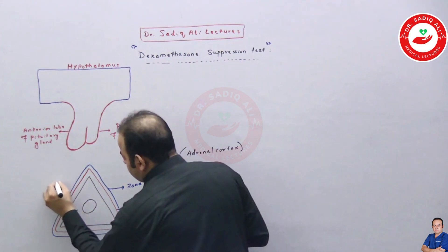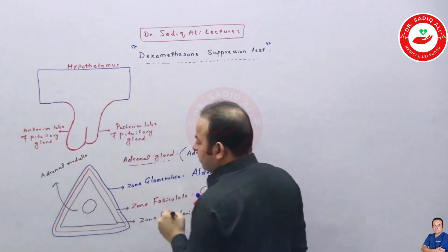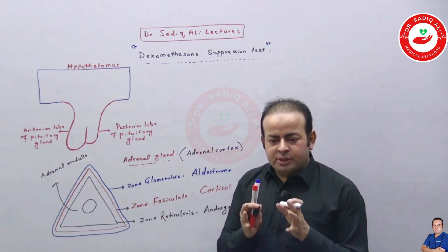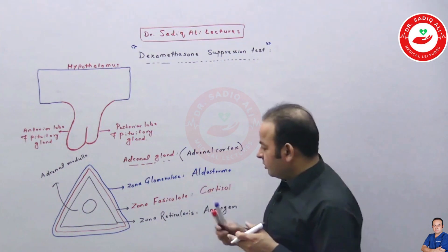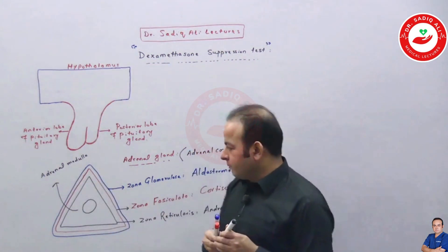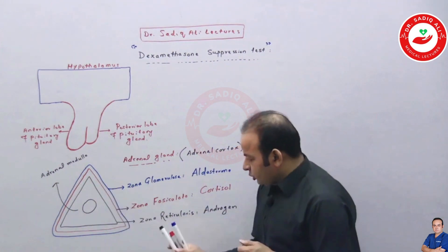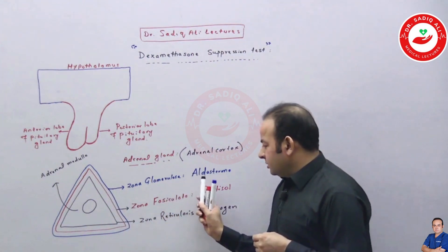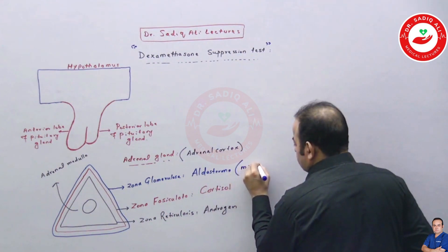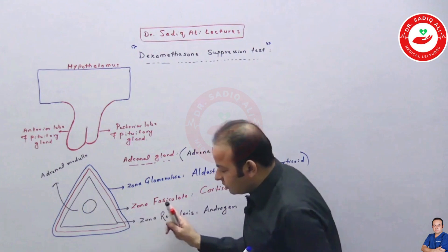The adrenal medulla releases very important substances, but now we are focusing on the adrenal cortex. The adrenal cortex has three layers. The outer layer is called the zona glomerulosa, which releases a hormone known as aldosterone, also referred to as a mineralocorticoid.